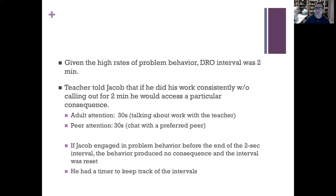Jacob is a typically developing child, so he was actually given a timer so he could keep track of the interval and know when the reinforcer was coming. He could look at the timer and think: I need to be quiet for two minutes, then I get the reinforcer, the timer starts again, and I have to be quiet again. By not calling out, he'd get adult attention or peer attention every two minutes.